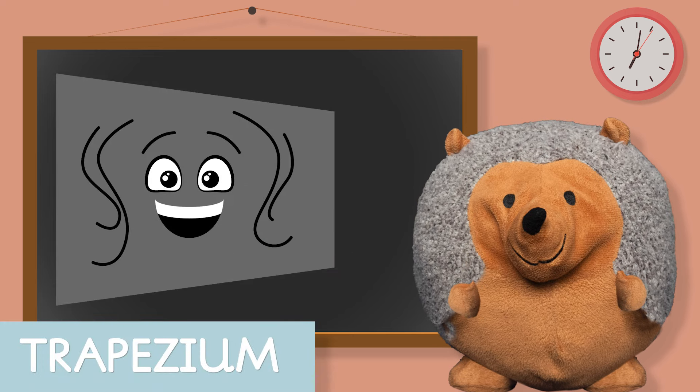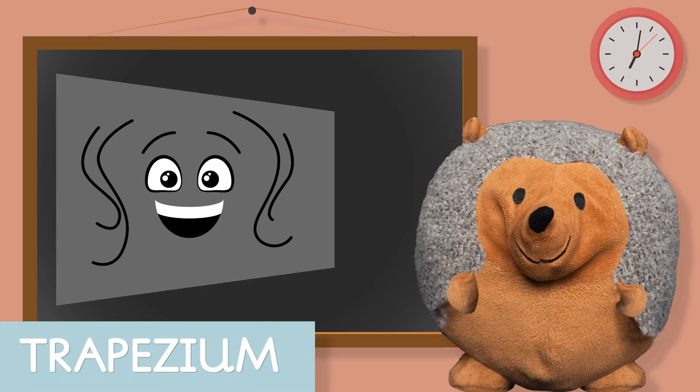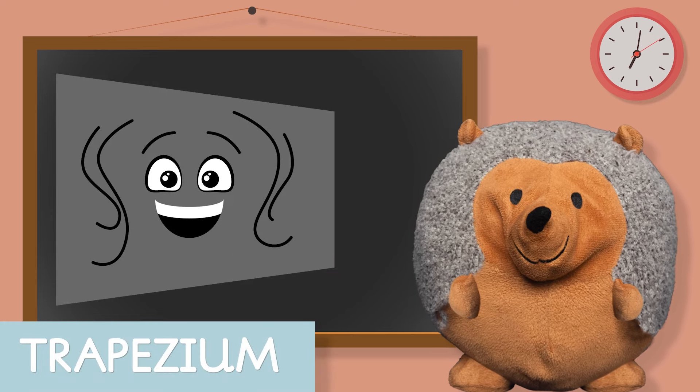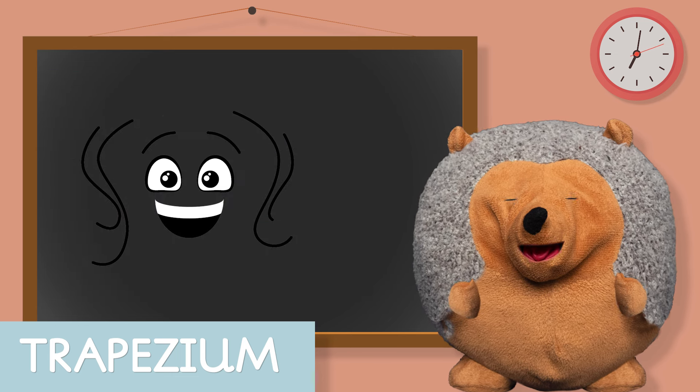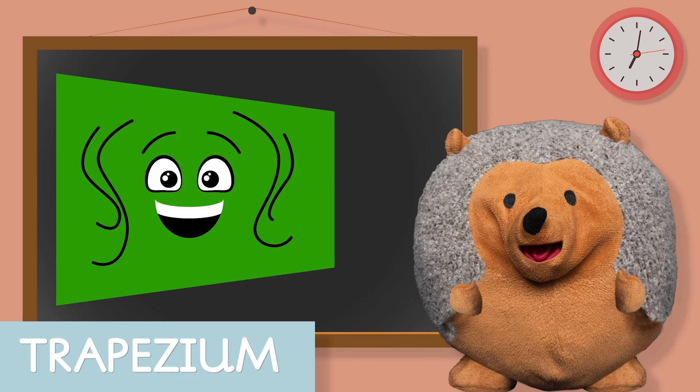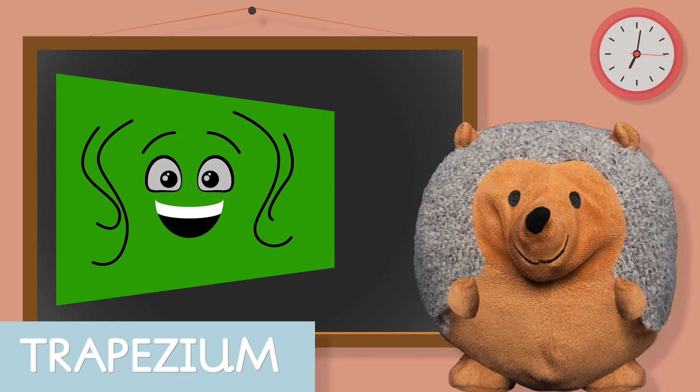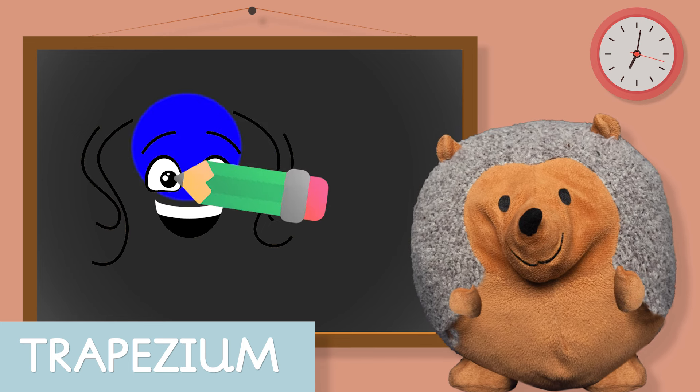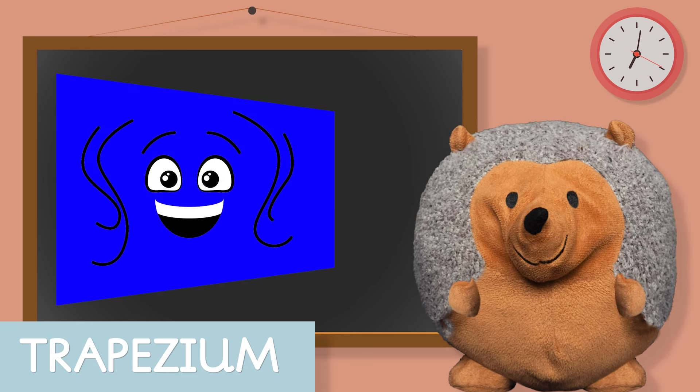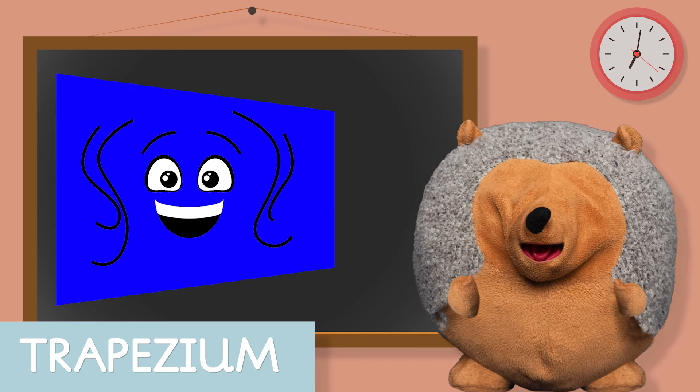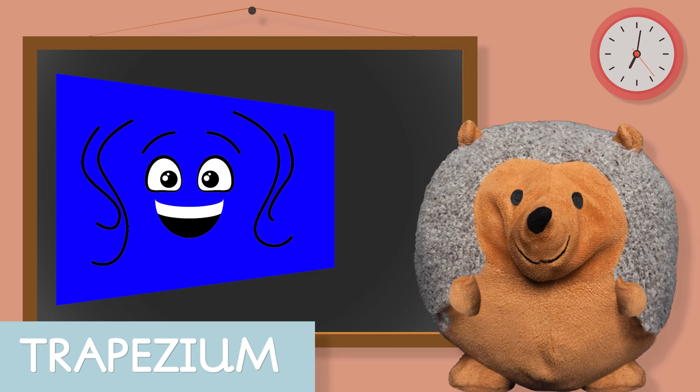So now we have a trapezium. This trapezium is grey. And the next one is a green trapezium. And this one is a blue trapezium. So that is what a trapezium looks like.